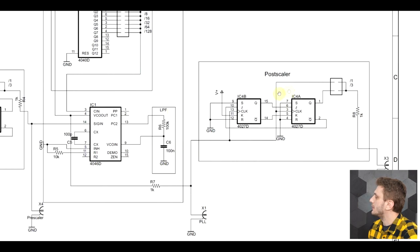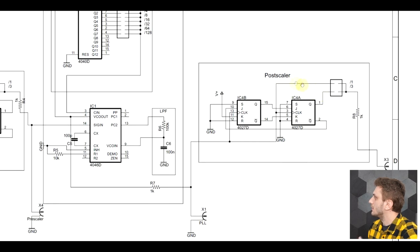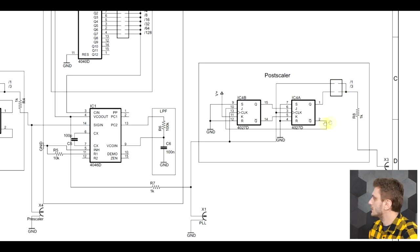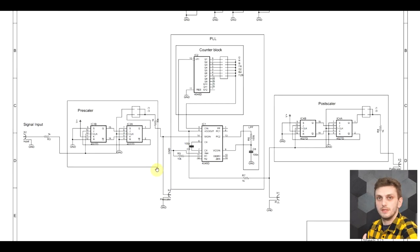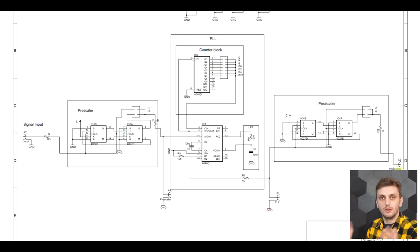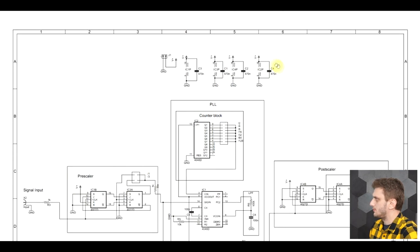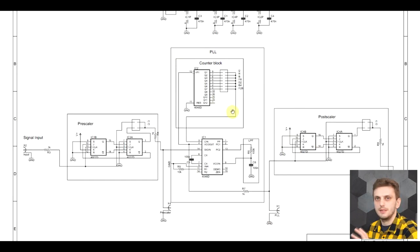I have a jumper assembly to select between different division rates. At the output of the PLL, there's another counter circuit — the post-scaler — again with jumpers to either bypass it or not. This is the same circuit as the pre-scaler, so we can divide by three or bypass. To see all signals at the same time, we have BNC connectors at the input, after the pre-scaler, after the PLL, and after the post-scaler. There are also decoupling capacitors for each of the four main ICs on the board.